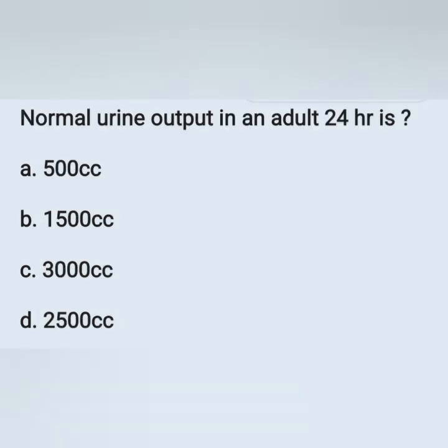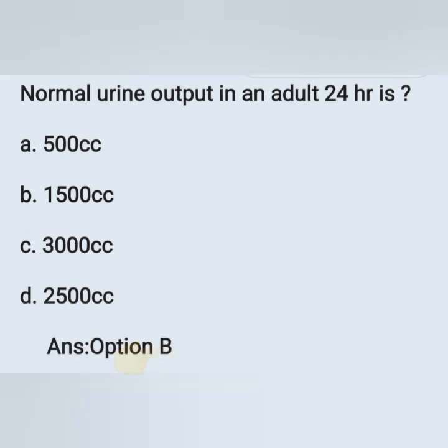Normal urine output in an adult over 24 hours: Option A — 500 cc. Option B — 1500 cc. Option C — 3000 cc. Option D — 2500 cc. Here the options are in cc; 1 cc equals 1 ml. The normal urine output in an adult in 24 hours is 1500 cc. Option B is the correct answer.